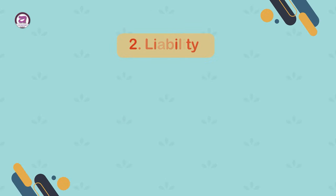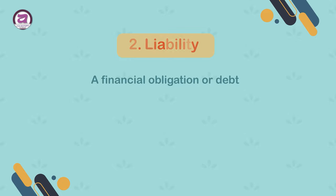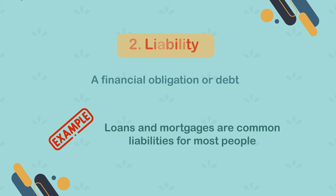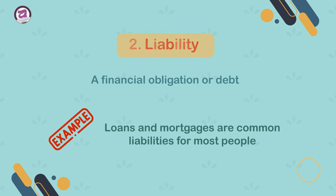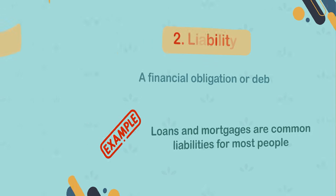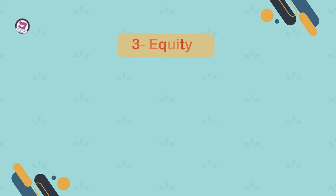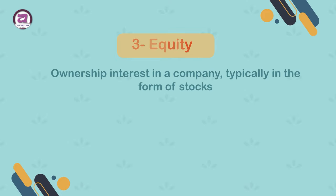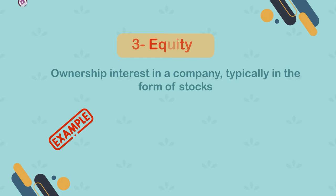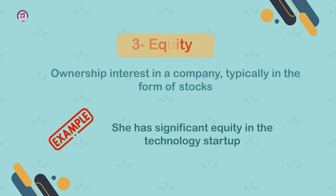2. Liability. A financial obligation or debt. Example: loans and mortgages are common liabilities for most people. 3. Equity. Ownership interest in a company, typically in the form of stocks. Example: she has significant equity in the technology startup.